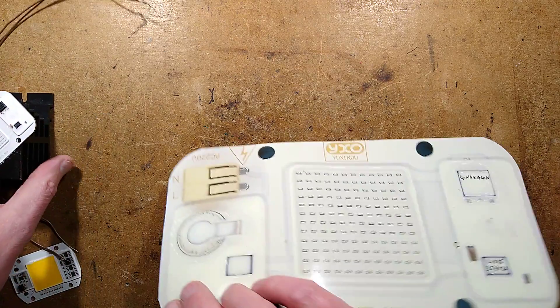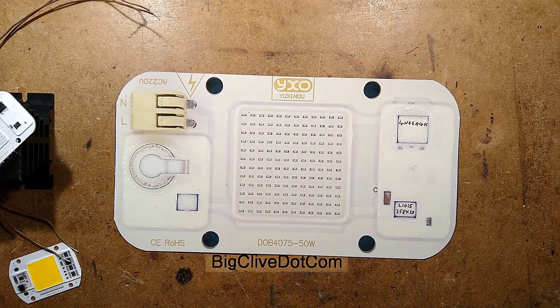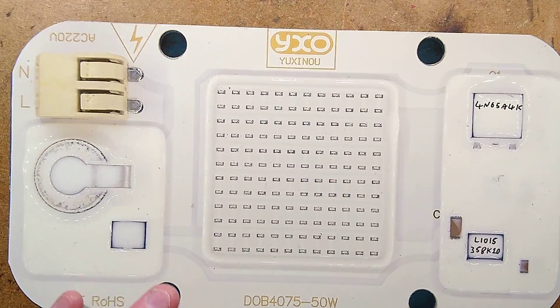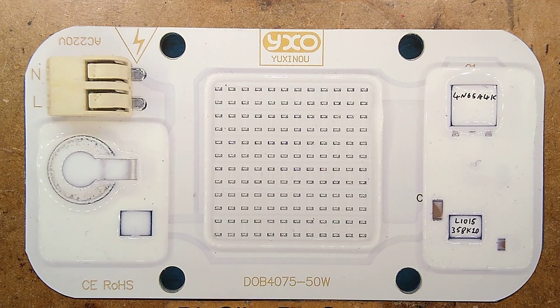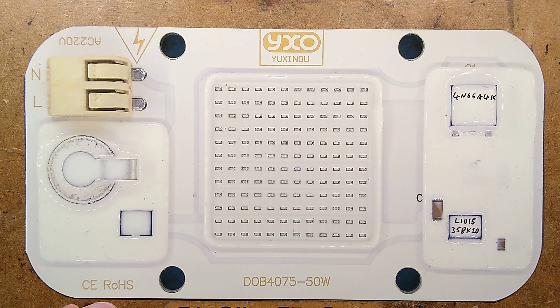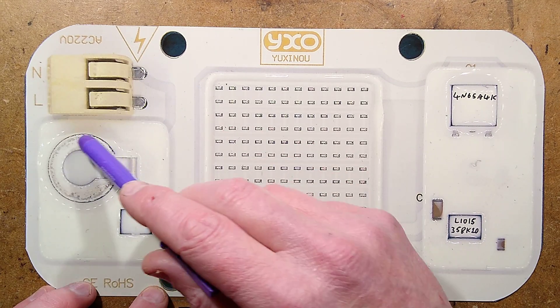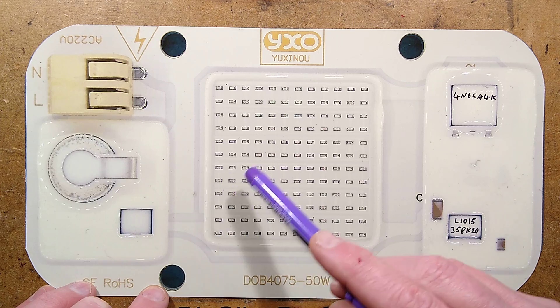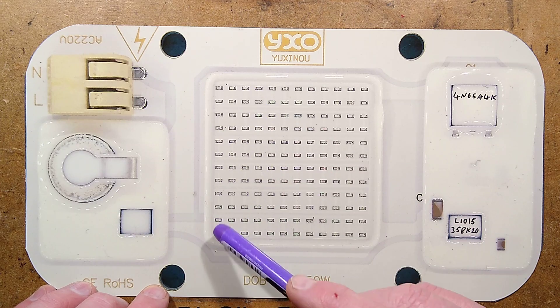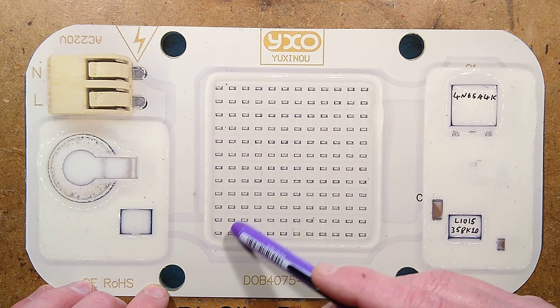If we take a closer look at the chip, we can see the incoming power here. We've got a metal oxide varistor, a bridge rectifier, and the LEDs wired as a large series string of parallel pairs.